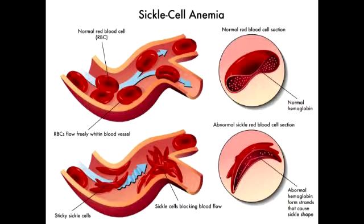Along with increased risk of infection with encapsulated organisms, what other bacterial infection can occur with sickle cell anemia? With sickle cell anemia, there is also an increased chance of salmonella osteomyelitis. Sickle cell anemia can lead to painful crises due to vaso-occlusion, including dactylitis (painful hand swelling), acute chest syndrome, and avascular necrosis.